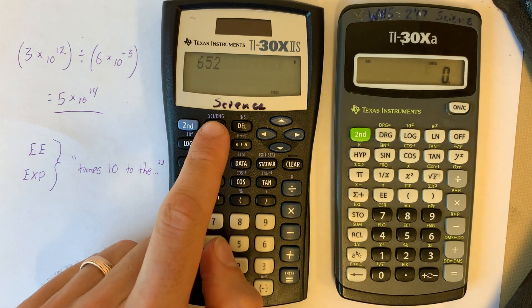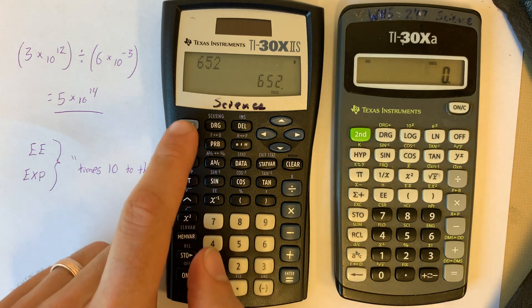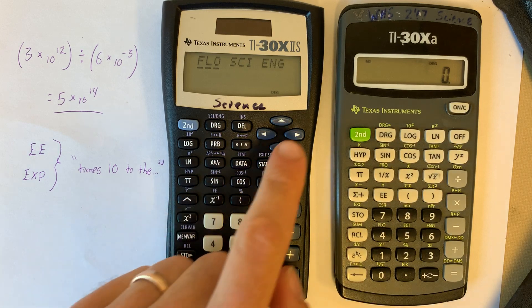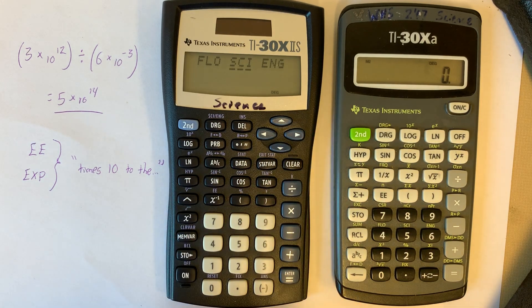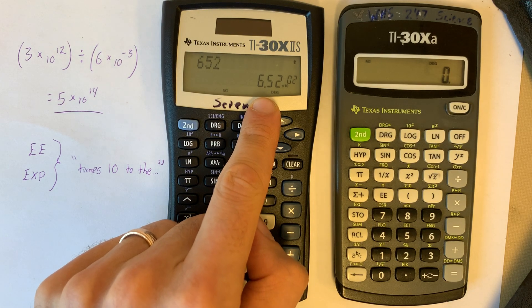Up here it says SCI. That means scientific notation. So I have an answer, and I'm gonna press 2nd SCI, scroll over to SCI for scientific, hit enter, and now it's displaying my answer in scientific notation.